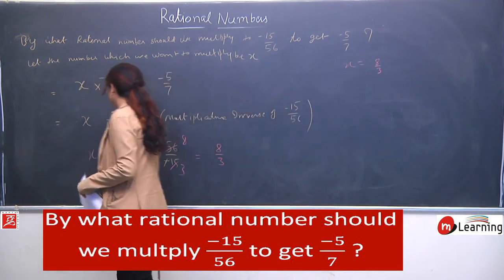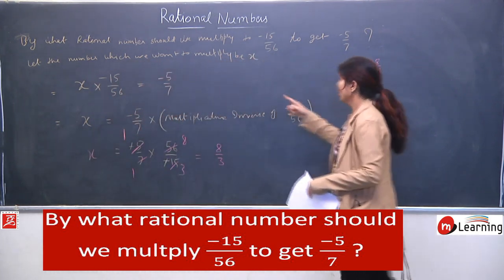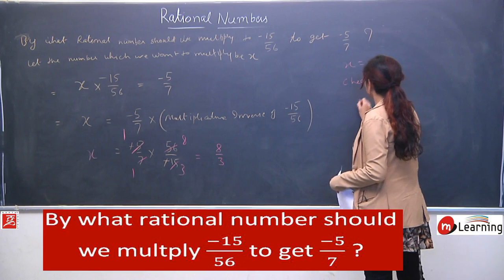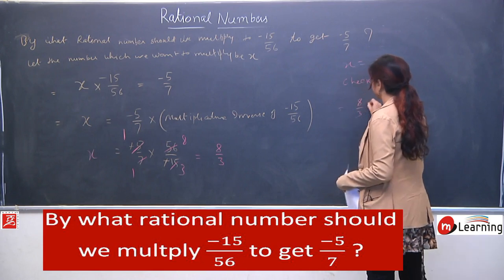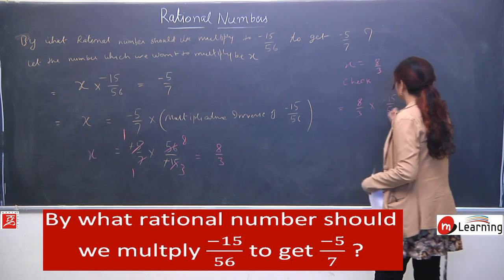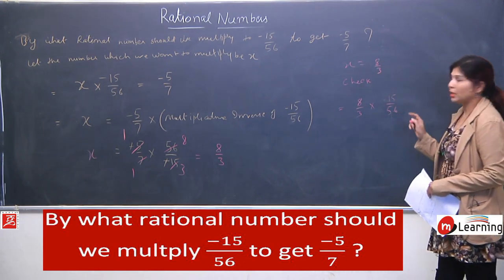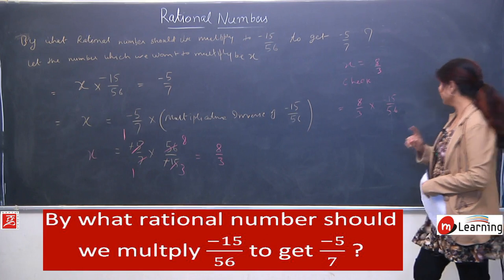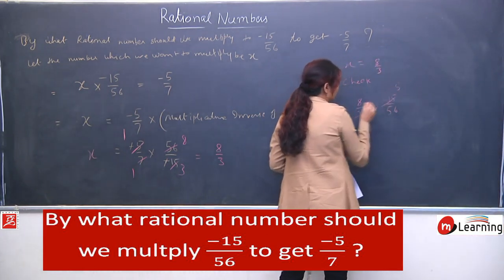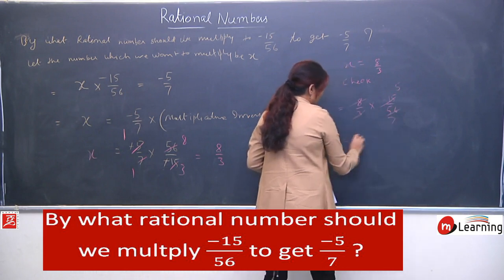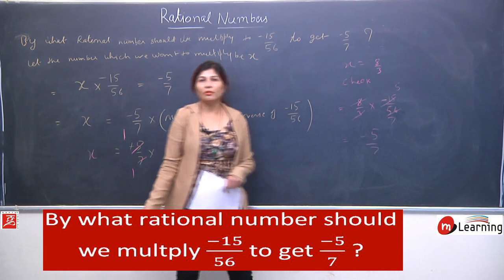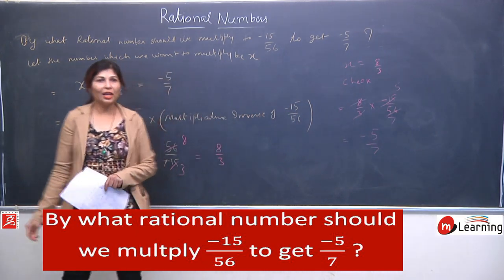Now I will check or verify: x ki place pe 8 by 3, multiply to the minus 15 by 56. Answer humhara aana chahiye minus 5 by 7. 3 fives are 15, 8 sevens are 56 — so finally it is minus 5 by 7. So it is verified. Toh hum ne product ki bhi saari sums liye. Har tarike ka pattern liya. What is the remaining operation? Division bacha hai — usse hum kaise chodein.